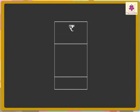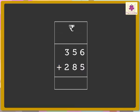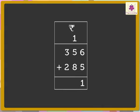Let us add 356 rupees and 285 rupees. 6 plus 5 is equal to 11. Carry 1 above the number 5. Write 1 in the answer, that is, in the units place.